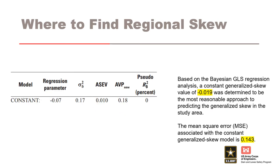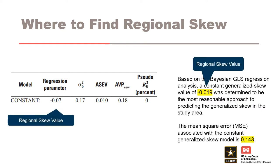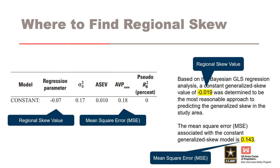Regional skew studies often evaluate multiple options and adopt or recommend the most appropriate estimates of regional skew, which is usually the method with the smallest mean square error and the largest pseudo R-squared. Mean square error is a parallel to variance and is a common metric for uncertainty in an estimator. The larger the mean square error, the smaller the confidence in the estimate.